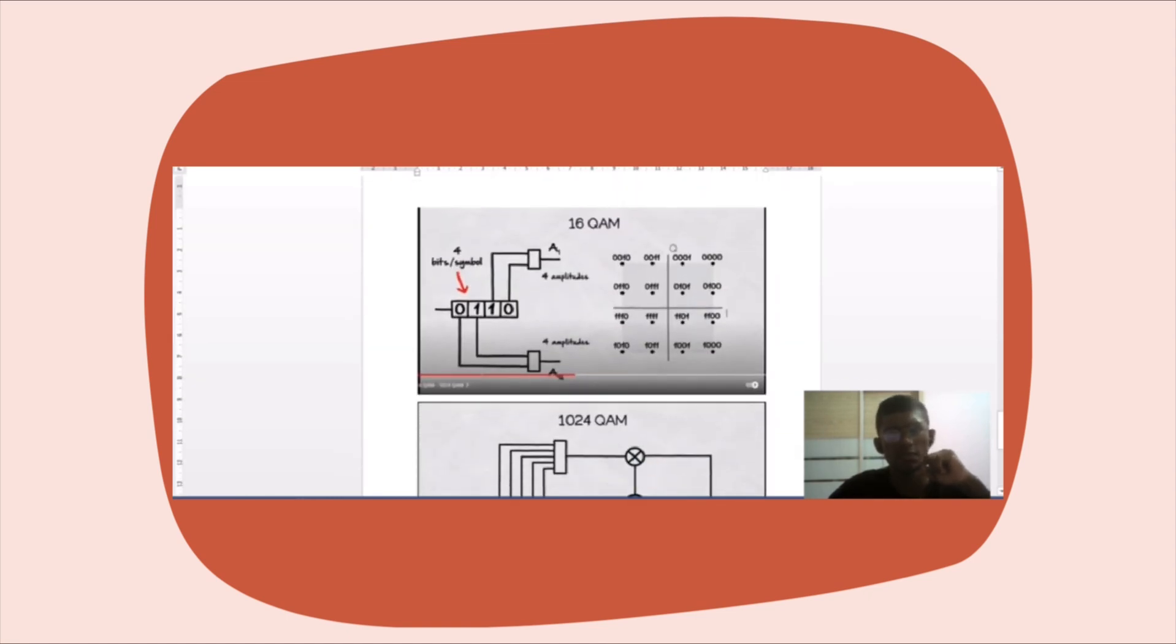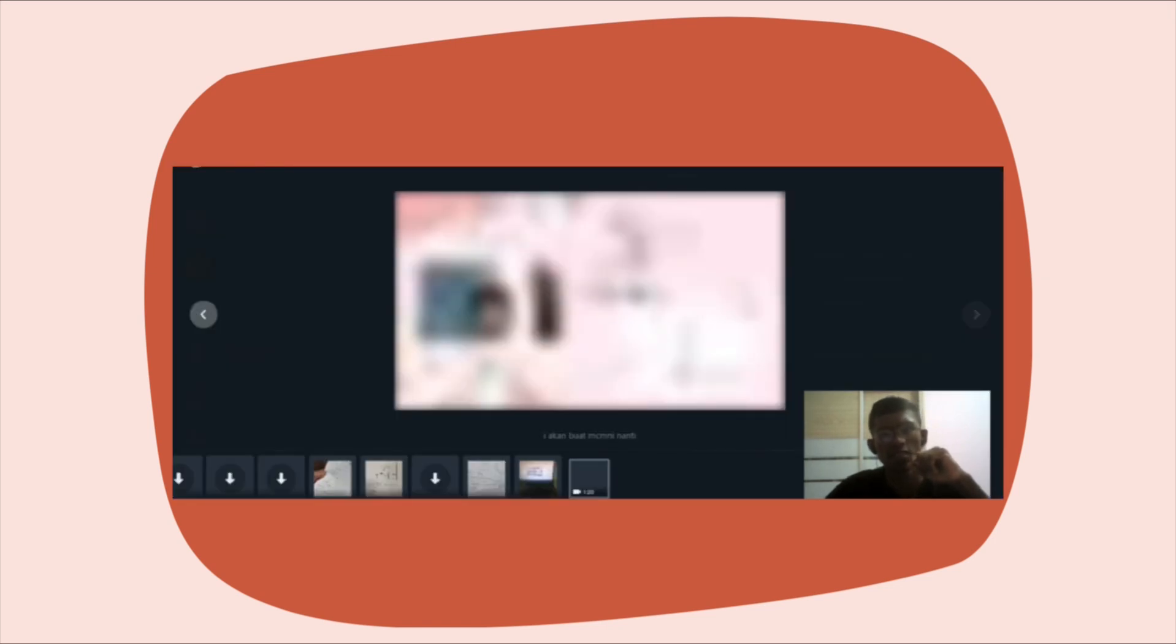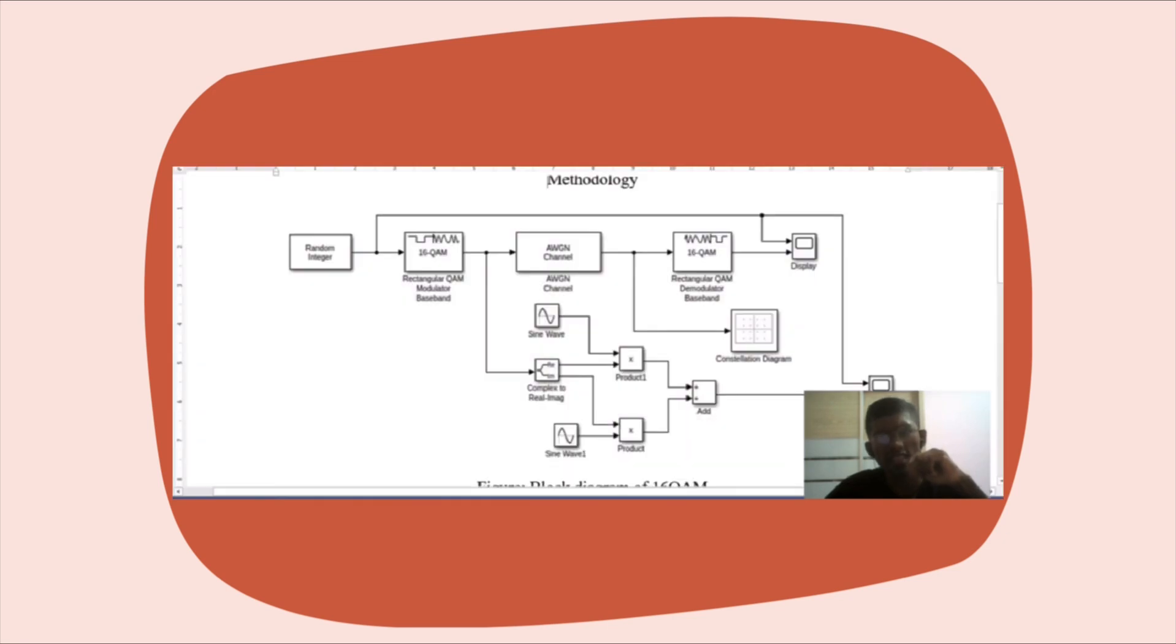In our project, in our experiment, we were using a 16-QAM modulator. We take 4 bits per symbol in one time, and then we have 16 dots in our QI graph. We can see here the channel and the diagram.